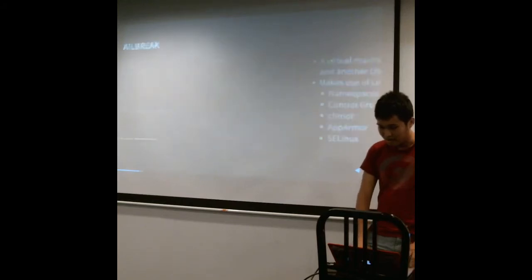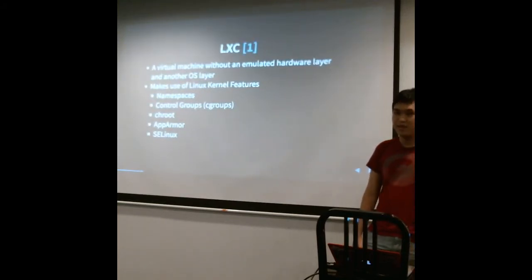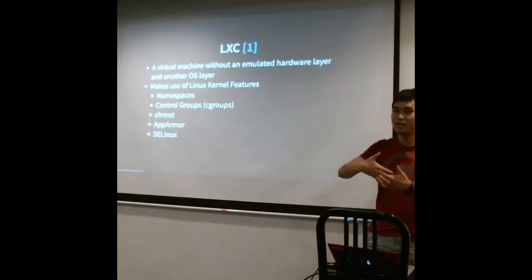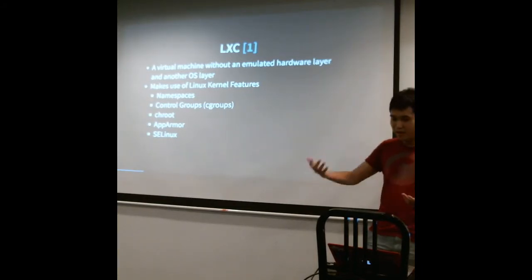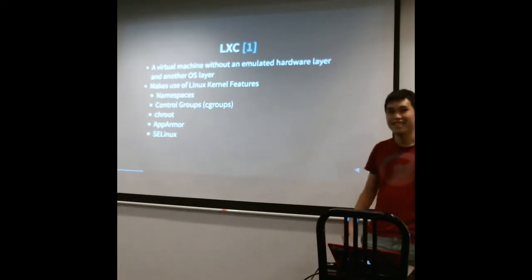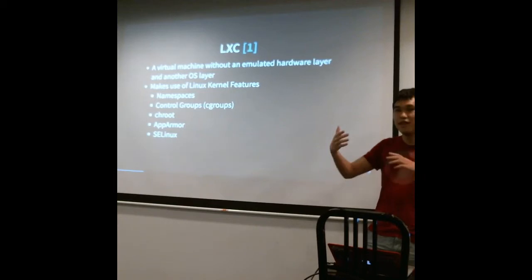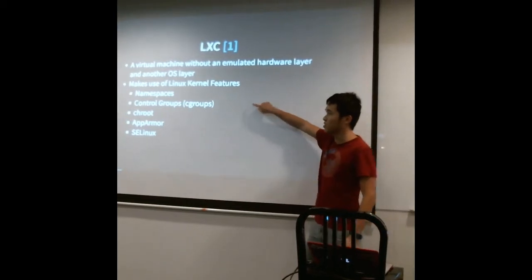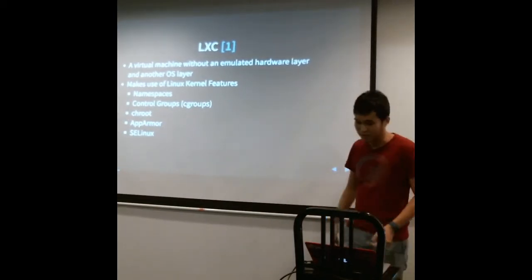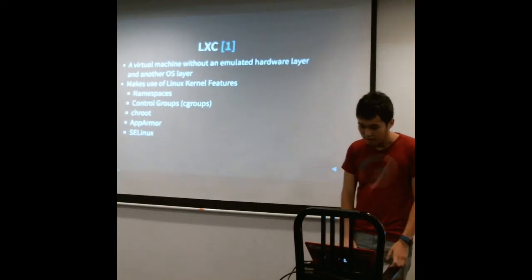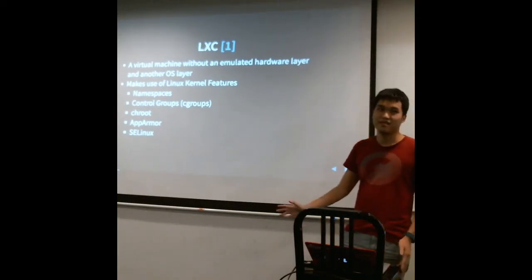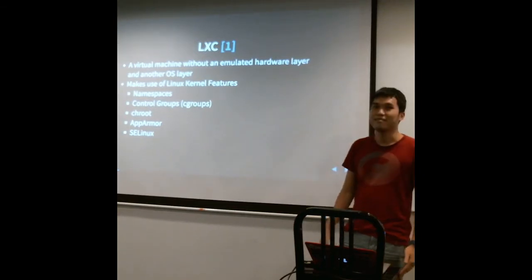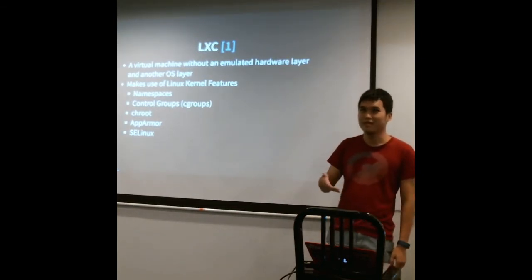So now I'm ready to talk about LXC. LXC is basically — you can think of it as a virtual machine, but without emulating another hardware layer. You can install your dependencies, whatever binaries you need, write your applications and it behaves as though it's another virtual machine, but it doesn't need to emulate a hardware layer. It makes use of Linux kernel features — today I'll be talking about namespaces and control groups, and chroot, which I've talked about. The only problem with LXC is that it's quite difficult to use. The documentation is rather terrible if you go to the LXC website, and it's because it's invented by Canonical, so it only works with Ubuntu first. If you're using Red Hat, good luck.